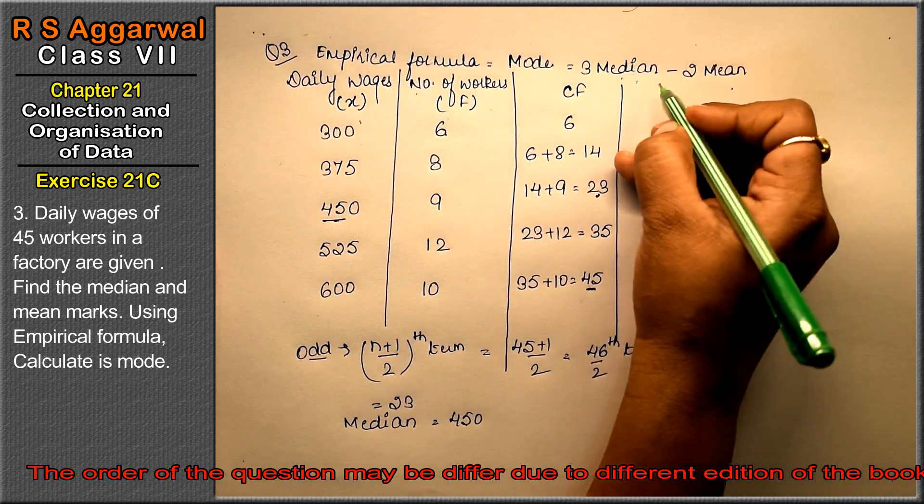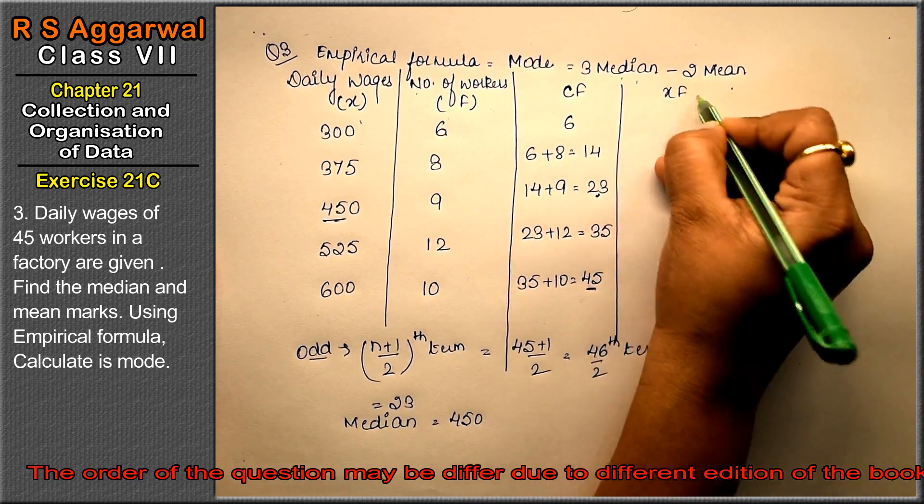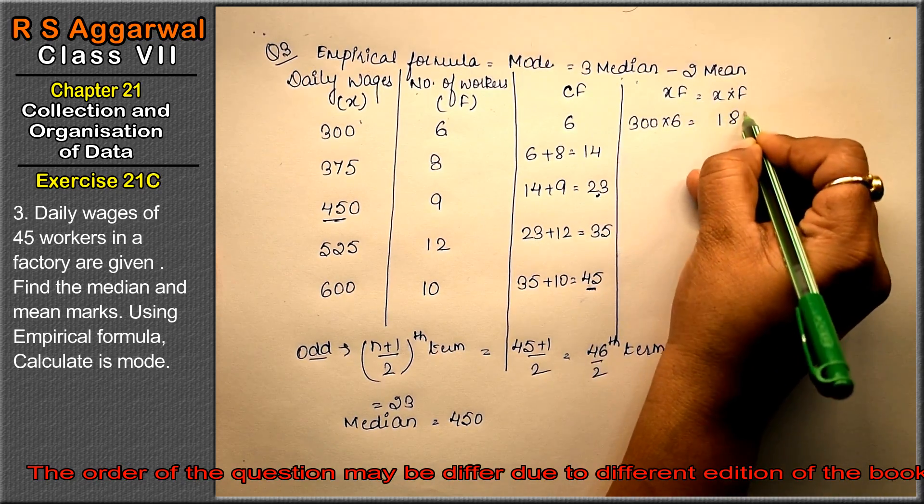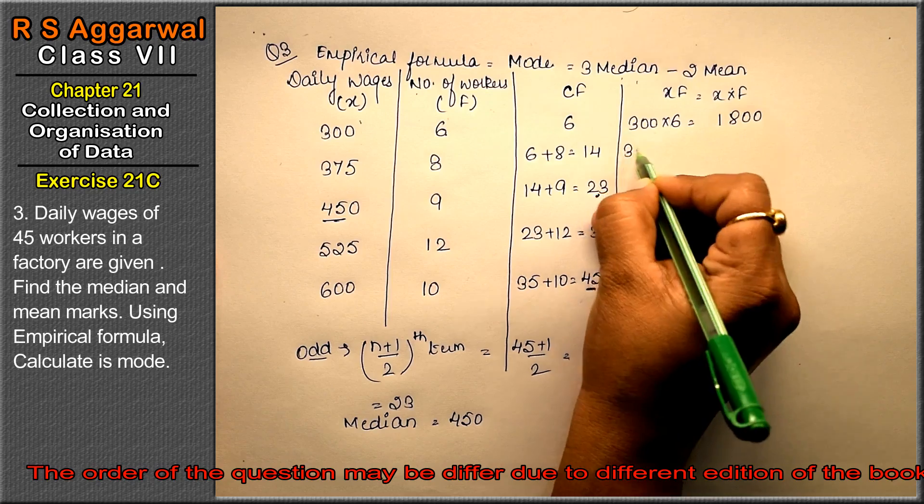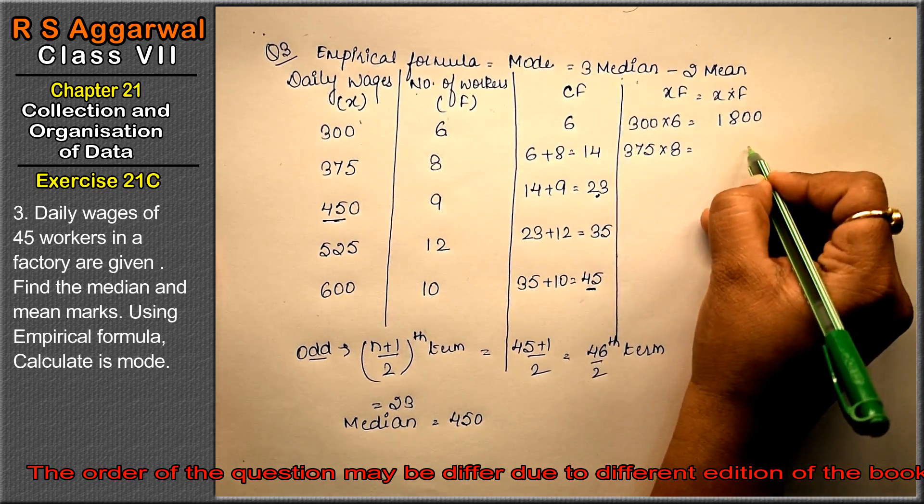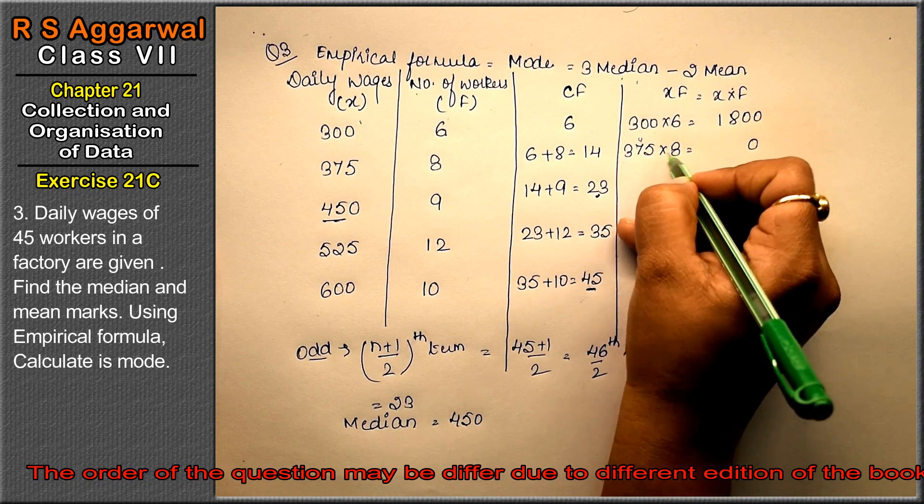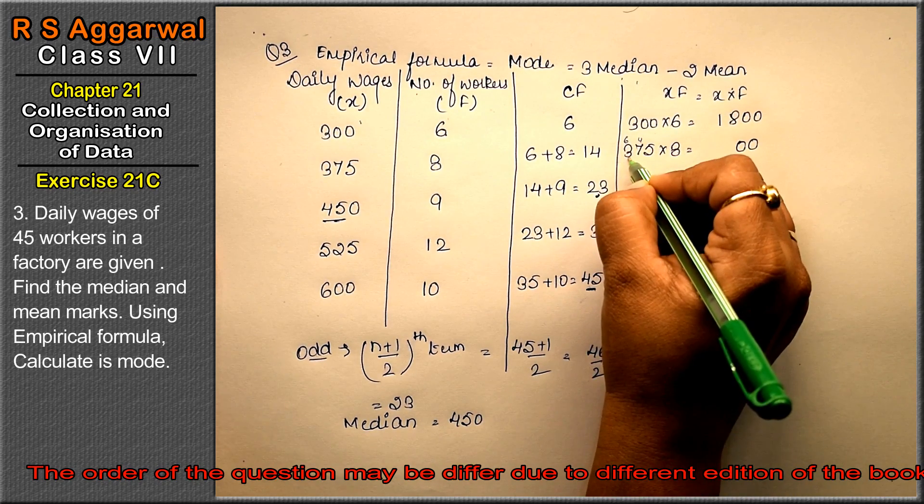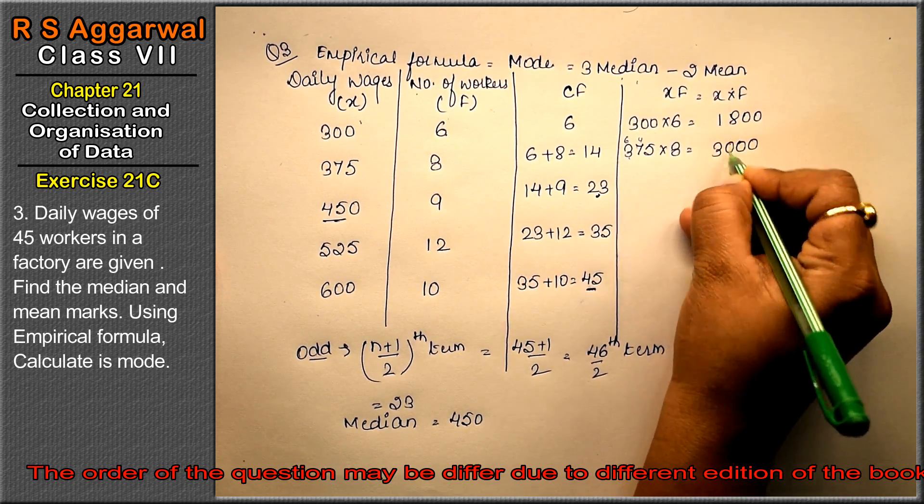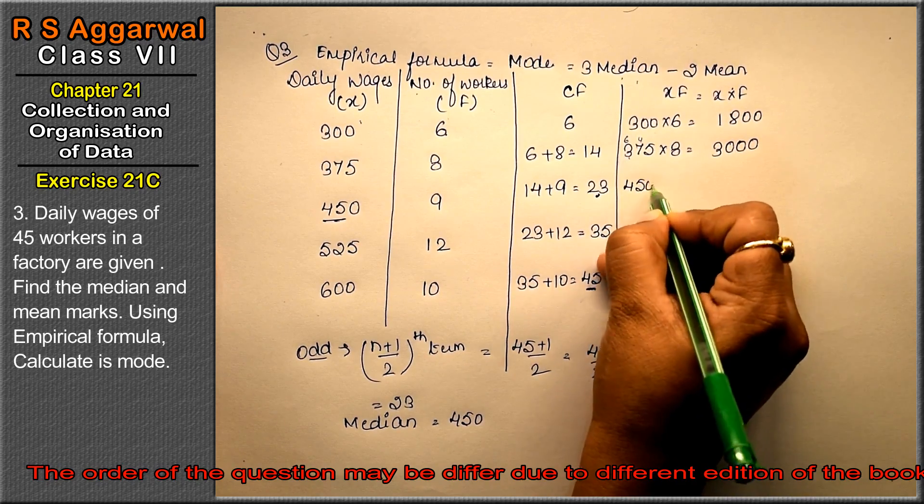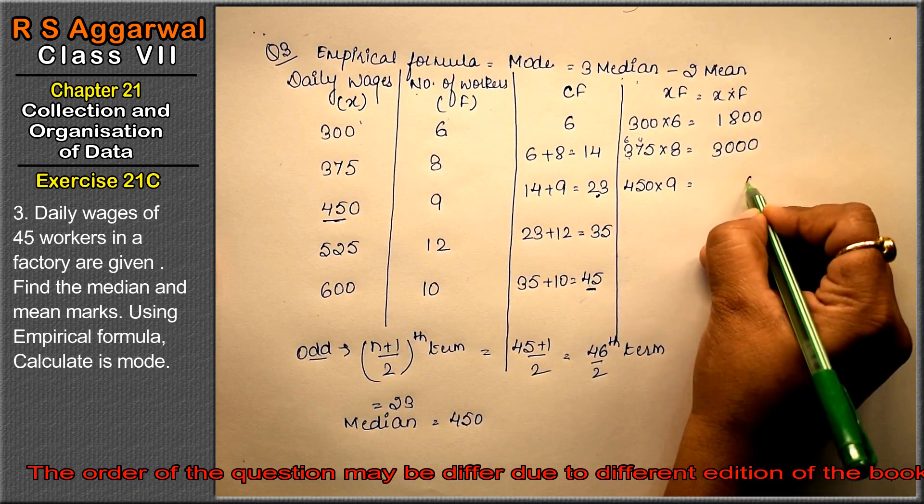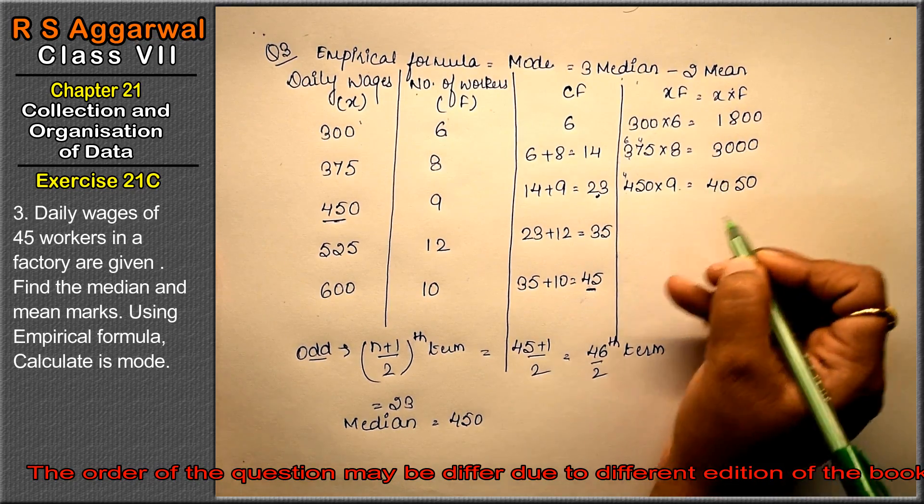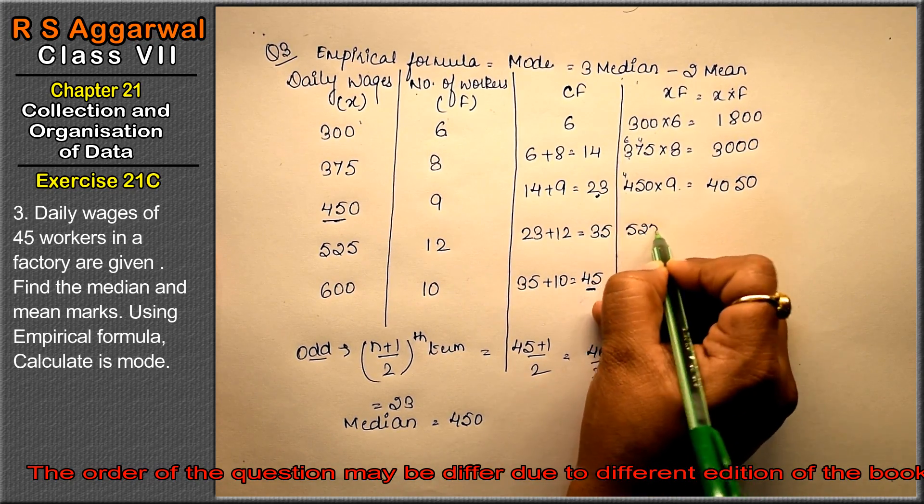Now we have mean left. For mean we need xf, that is x into f. So what is this? 300 into 6, that is 1800. 375 into 8: 8 fives are 40 carry 4, 8 sevens are 56 plus 4 is 60 carry 6, 8 threes are 24 plus 6 is 30, that's 3000. 450 into 9: 9 zeroes are 0, 9 fives are 45 carry 4, 9 fours are 36 plus 4 is 40, that's 4050.